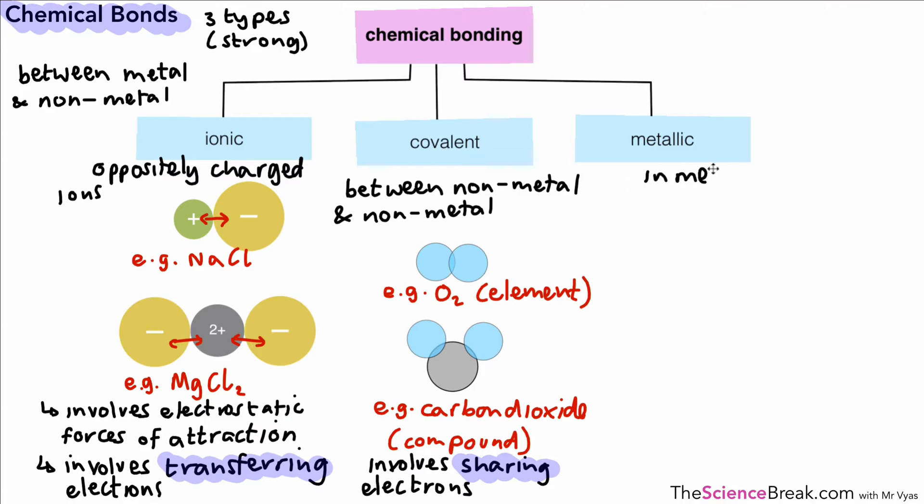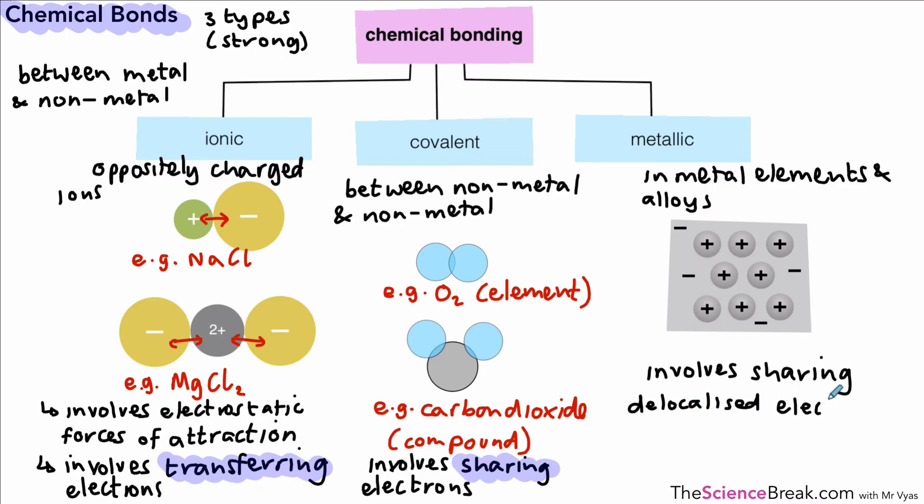The last type of strong bond is called the metallic bond. This happens in metal elements and in alloys. If we have a mixture of metals, they are called alloys, and this is where we see metallic bonds. The key point to remember is that metallic bonding involves the sharing of delocalized electrons. These are electrons that are free to move around the structure. We're going to look at that in detail in a future video.